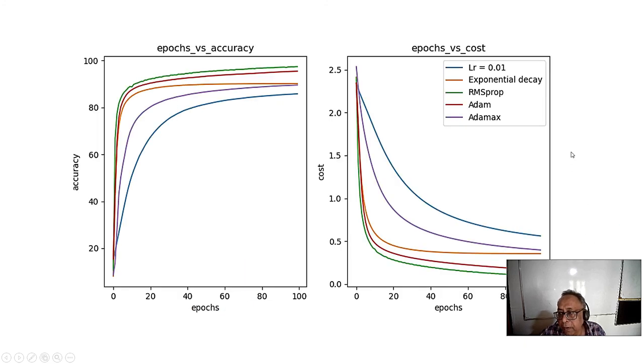We can see we always try for Adam optimizer because this is proven, Adam or RMSprop, it gives better results for our deep learning calculations.